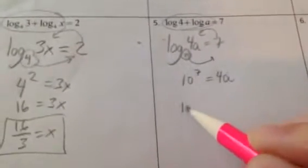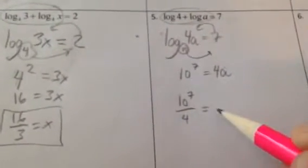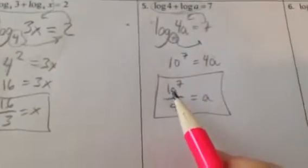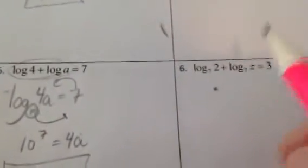So divide by 4. 10 to the 7th divided by 4, that'll be what a is. It'll be a pretty big number. I'm just going to leave it there. It's 1 with 7 zeros divided by 4. We keep going.